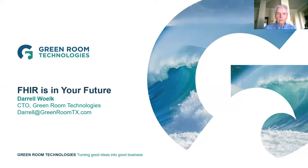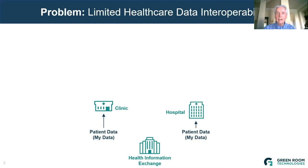I'm going to use this diagram to talk about some of the problems caused by a lack of healthcare data interoperability in the past, and then how FHIR is helping to solve those problems today. I use examples of three healthcare organizations in the diagram: a hospital where I recently had surgery, a clinic on the left where my dermatologist practices, and finally a health information exchange at the bottom.